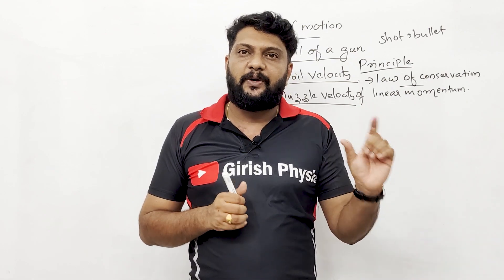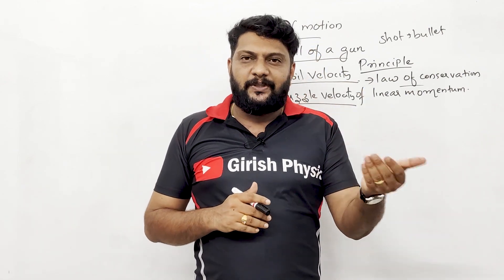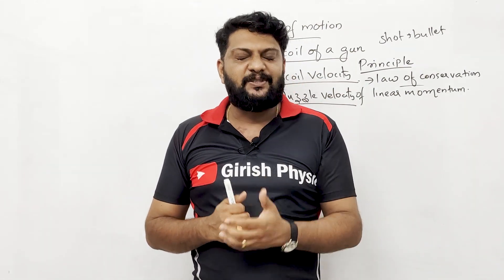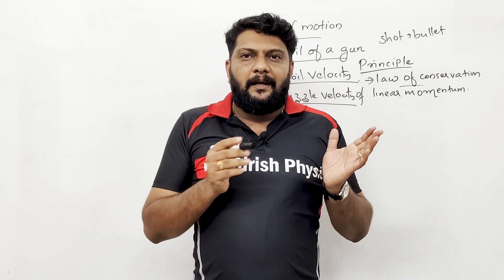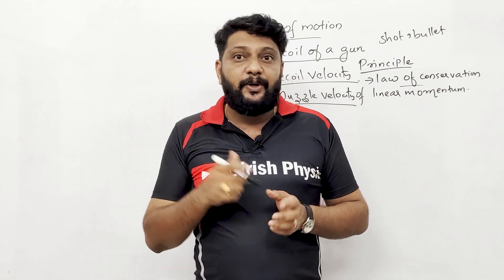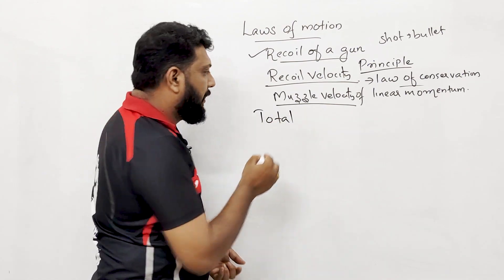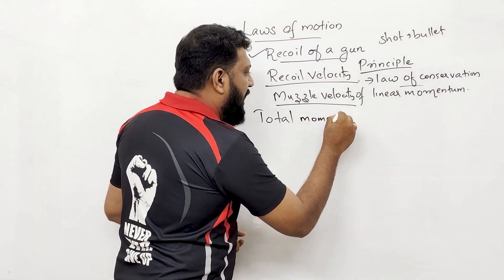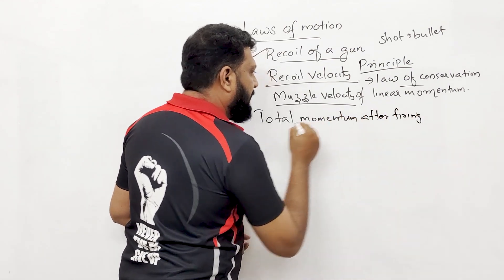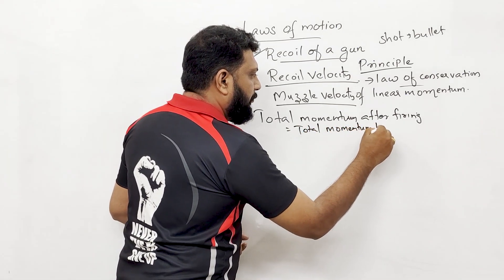Recoil of a gun is based on the principle of linear momentum conservation. According to the law of conservation of linear momentum, the total momentum after firing is equal to the total momentum before firing.